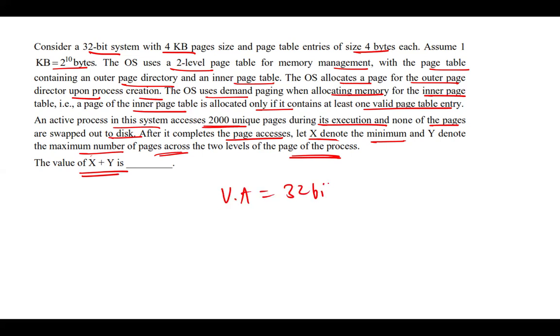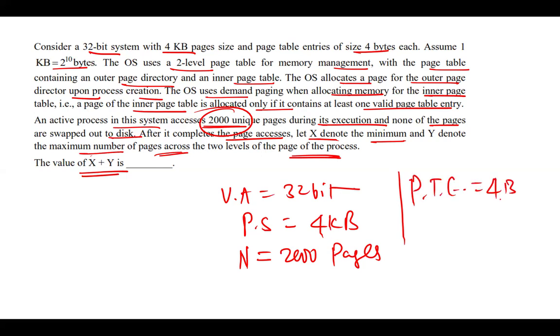The address is 32-bit and page size is 4KB. The total pages used by process n is 2000 pages, 2000 unique pages. The page table entry size PTE is 4 bytes. It is given in the question that operating system will allocate a page for the outer page directory upon process creation.